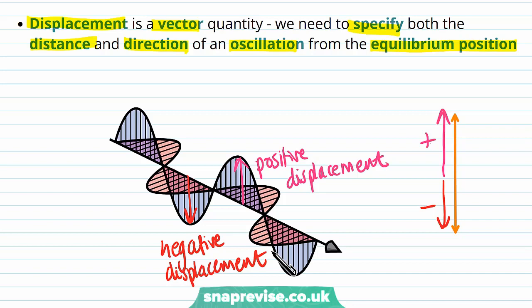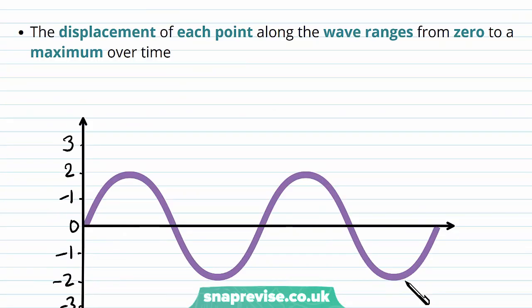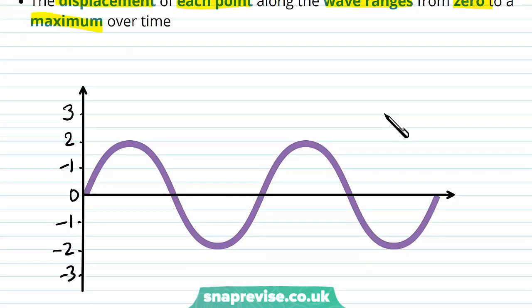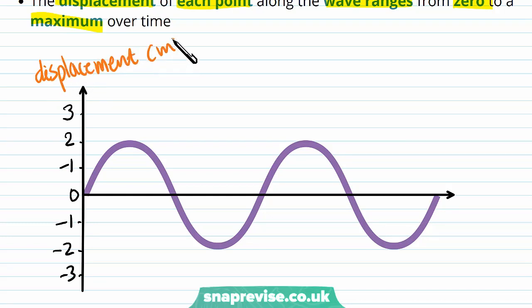You just need to define one of the two directions, and as long as we stick to the direction we define, we won't make any mistakes when solving problems. The displacement of each point along the wave ranges from zero to a maximum over time.